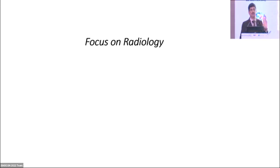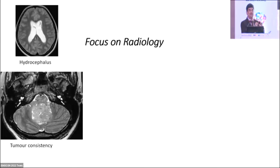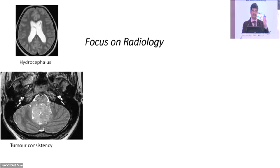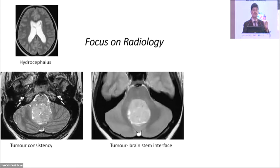On a high-definition T2 MRI, we can determine whether the tumor is soft or firm, and see fine dot-like vascular channels inside the tumor. More important is the tumor-brainstem interface — how the tumor is attached to the floor of the fourth ventricle will determine what residual nodules are left behind near the brainstem. We should carefully zoom in and examine the interface between the brainstem and tumor, and also assess cranial nerve and cord involvement.